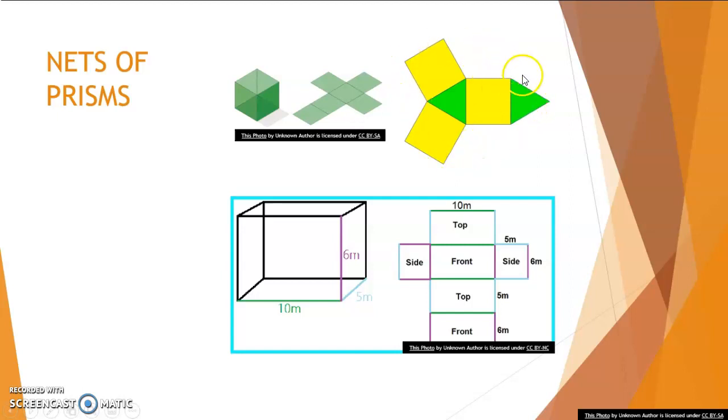If I look here at my triangular prism, it has two identical faces which are both triangles and three side faces which are squares.